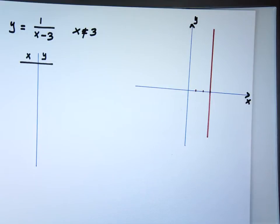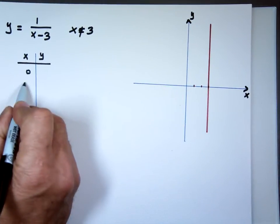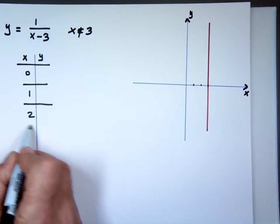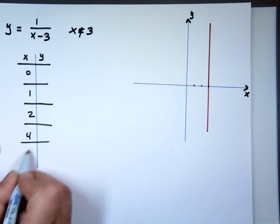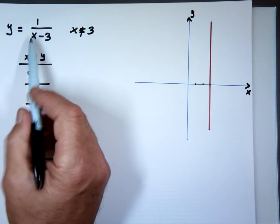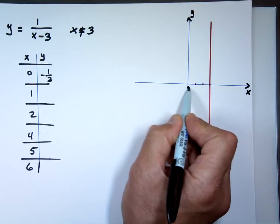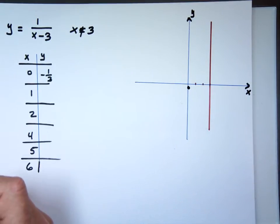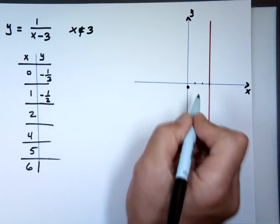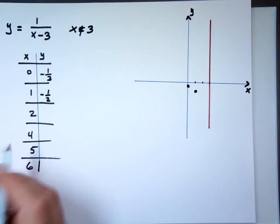So let's look to the left of that red line. I'll choose x values 0, 1, and 2. To the right of the red line I'll use 4, 5, and 6. When x is 0, plugging in gives negative 1 over 3.